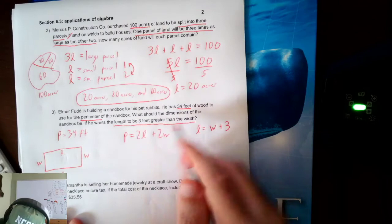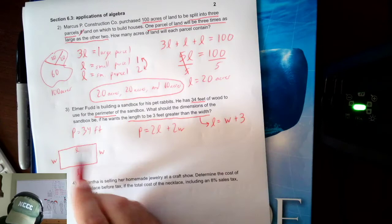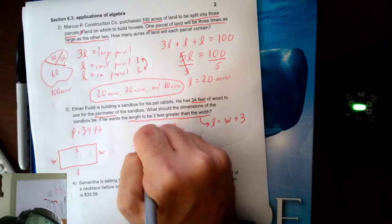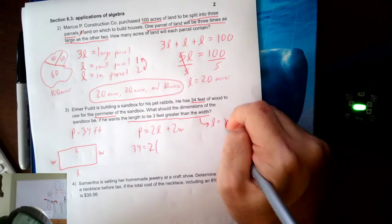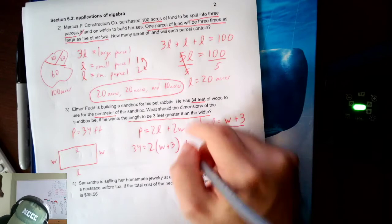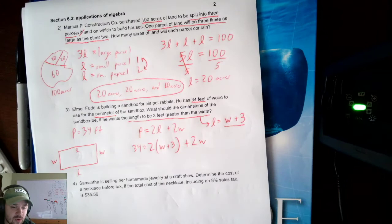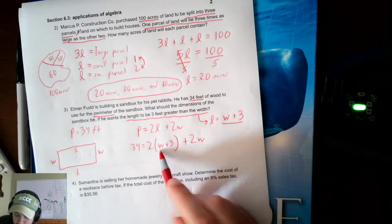I now have something for every variable except one. I know 34 equals 2L plus 2W, and L equals W plus 3. So I plug in W plus 3 where L goes, giving me 34 equals 2(W+3) plus 2W. Notice how many variables are in my equation now — only one, only W. W shows up twice, but I don't have more than one variable.